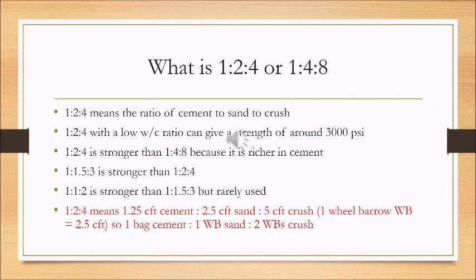The water-cement ratio is also important to understand. For 3,000 PSI concrete, the water-cement ratio is less than for 4,000 PSI — more cement means higher strength. In practice, one cement bag of 50 kg has a volume of 1.25 cubic feet. For a 1:2:4 mix, you would use 1.25 cubic feet cement, 2.5 cubic feet sand, and 5 cubic feet crush.